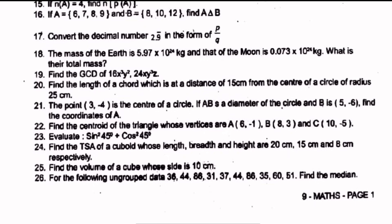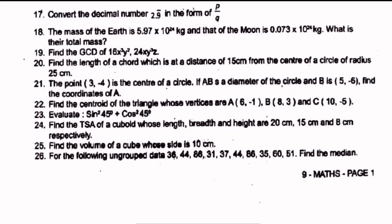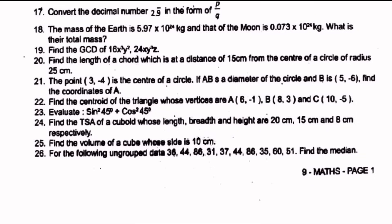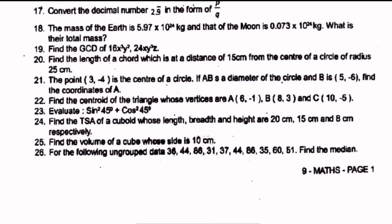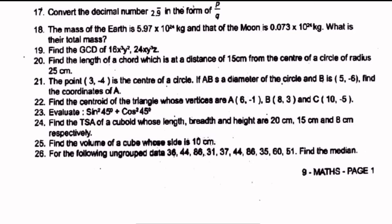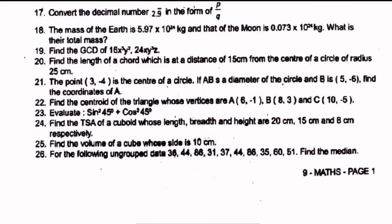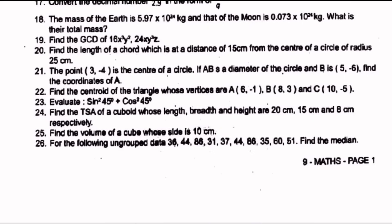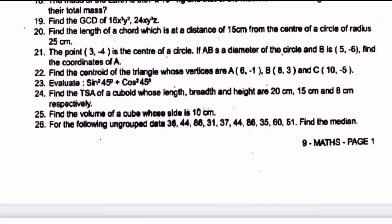Convert a number in the form P by Q in a very easy way. The mass of the earth is 5.987, and 1.5 mark is compulsory. GCD is defined by 18X³Y², 24XY³Z. If you look at the radius of 25 meters, you can find the length of the chord. Find the coordinates of A, given the diameter AB of a circle is 5.6.